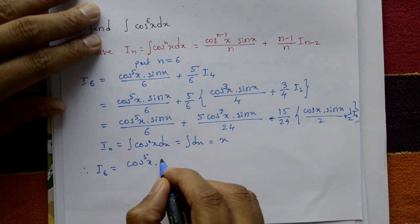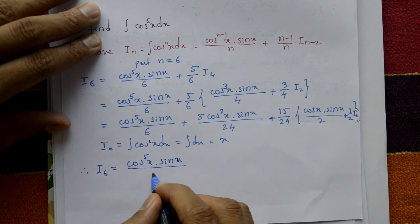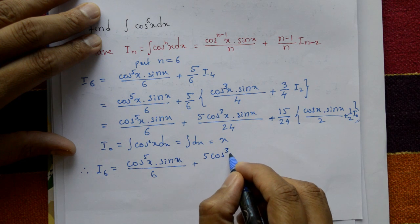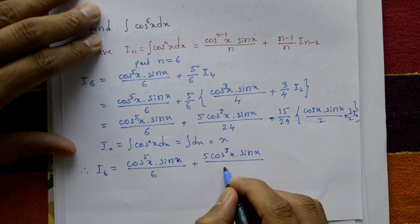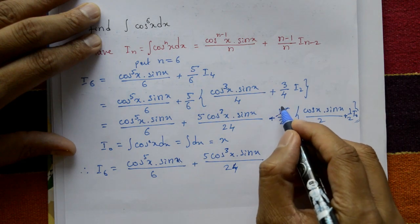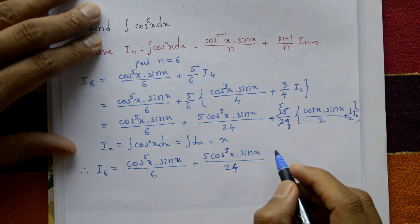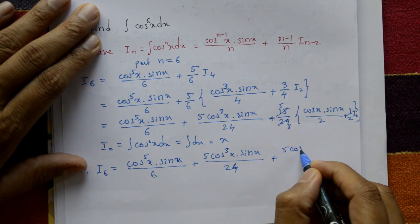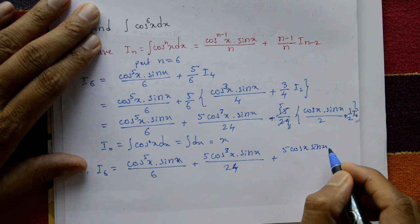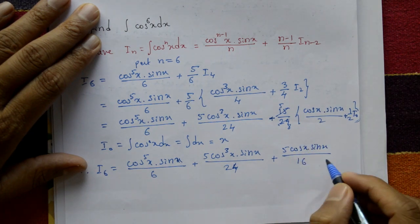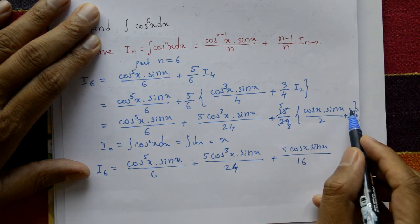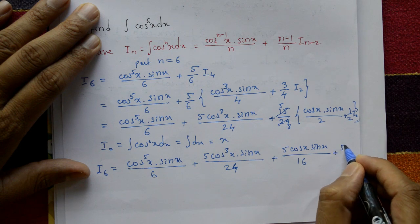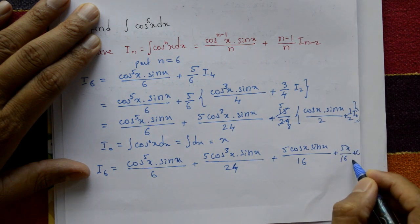Therefore I_6 equals cos^5 x times sin x divided by 6, plus 5 times cos^3 x times sin x divided by 24, plus 5 times cos x times sin x divided by 16, plus (5/16) times x, plus the constant of integration. This is the required solution.